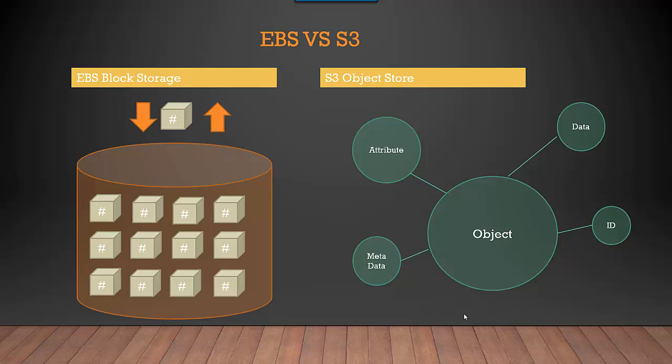With S3, objects get stored with their own metadata. Block storage stores data in fixed-size chunks called blocks; each block houses a portion of the data. Because the data is piecemeal, the address is the only identifying part of the block — no metadata is stored with the blocks.